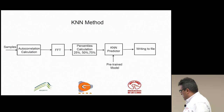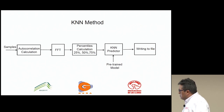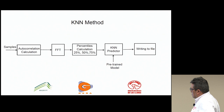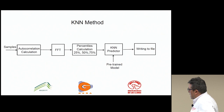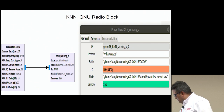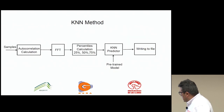This is the block diagram for the KNN method. We take the samples, calculate the autocorrelation, then the FFT. Then we calculate the 25th, 50th, and 75th percentiles, and pass those numbers through the KNN predictor, which has a pre-trained model. Then it makes the decision and writes it to a file. I will explain later why we use these percentiles.